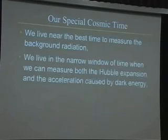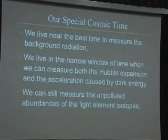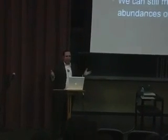We can also still measure the unpolluted abundances of the light element isotopes. There are three legs that support modern cosmology: first, the observation of the dynamics and distribution of galaxies to measure the expansion and acceleration of the universe; second, measurement of the cosmic background radiation demonstrating the universe was once hotter and denser; and third, the abundances of the light isotopes — hydrogen and its isotopes, helium and its isotopes, and lithium — produced in the earliest moments of the universe. The amounts we measure today are consistent with what models predict, so things are very self-consistent.